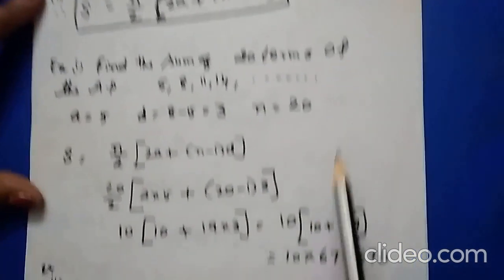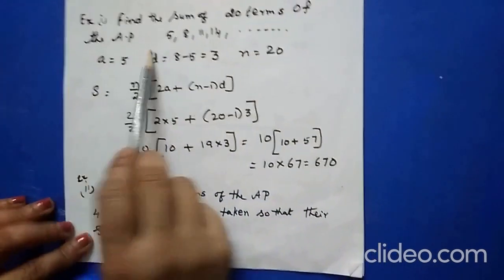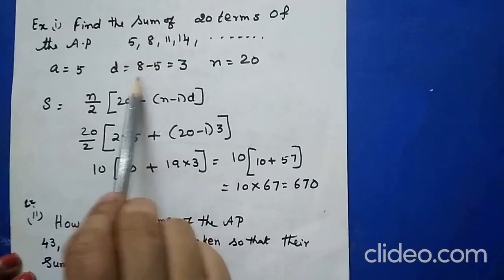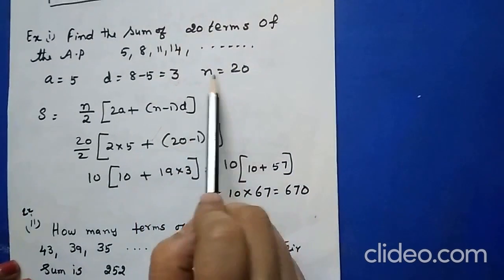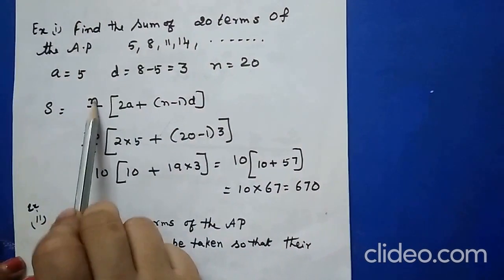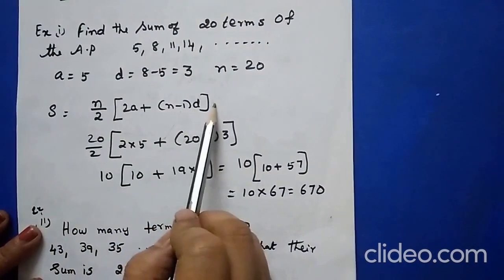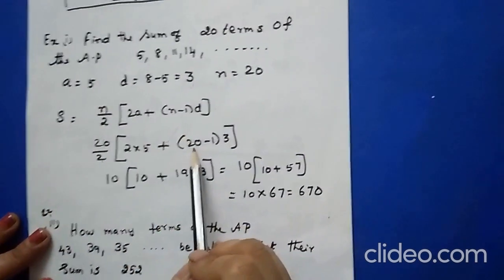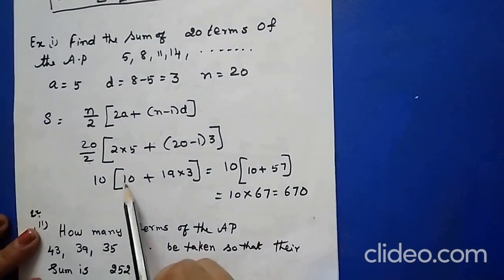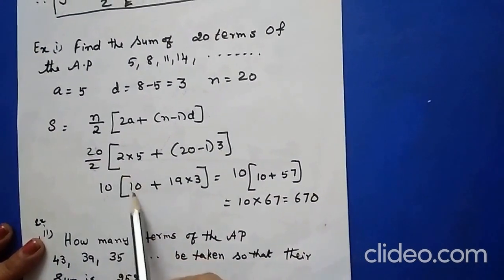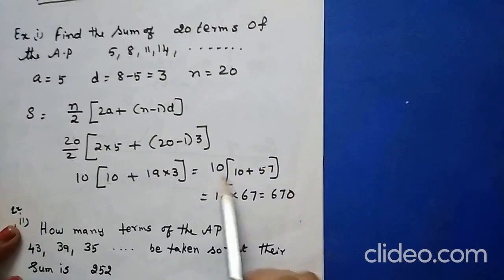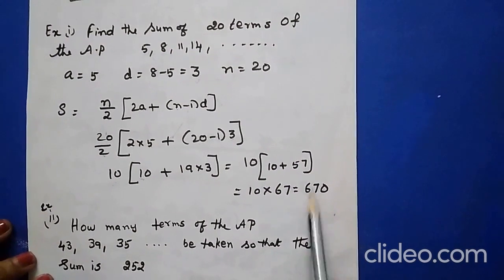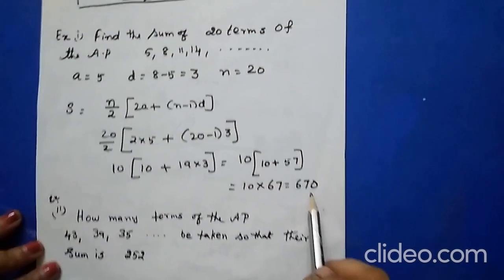Find the sum of 20 terms of the AP: 5, 8, 11, 14. A=5, D=8-5=3, N=20. Apply S = N/2 × [2A + (N-1) × D]: S = 20/2 × [2×5 + (20-1)×3] = 10 × [10 + 57] = 10 × 67 = 670. Therefore the sum of 20 terms of the AP 5, 8, 11 is 670.